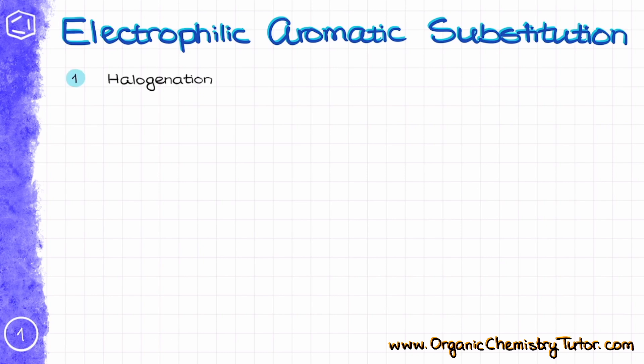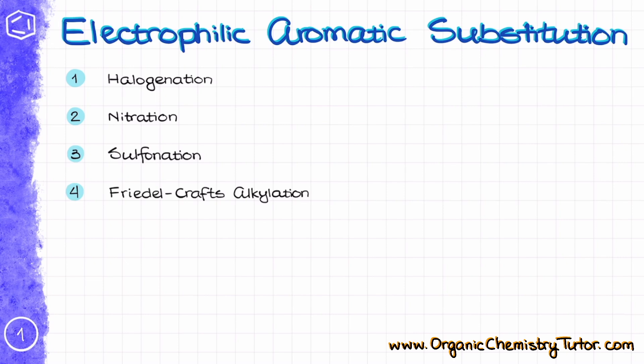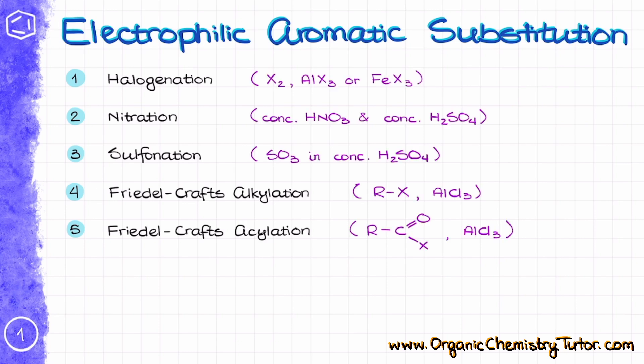Those five reactions are going to be the halogenation reaction, the nitration, the sulfonation, the Friedel-Crafts alkylation, and the Friedel-Crafts acylation reactions. Each of those reactions has a slightly different set of conditions, but they all have a very similar mechanism with only minor differences.